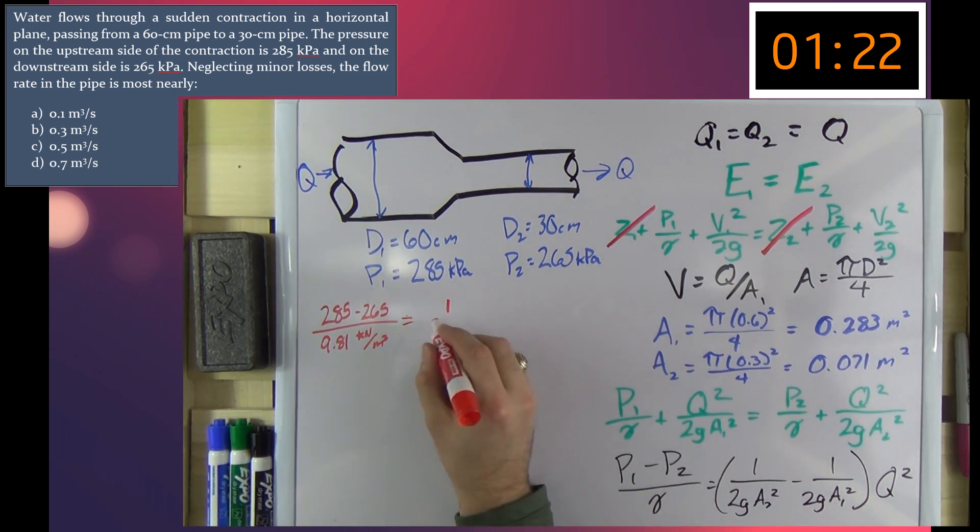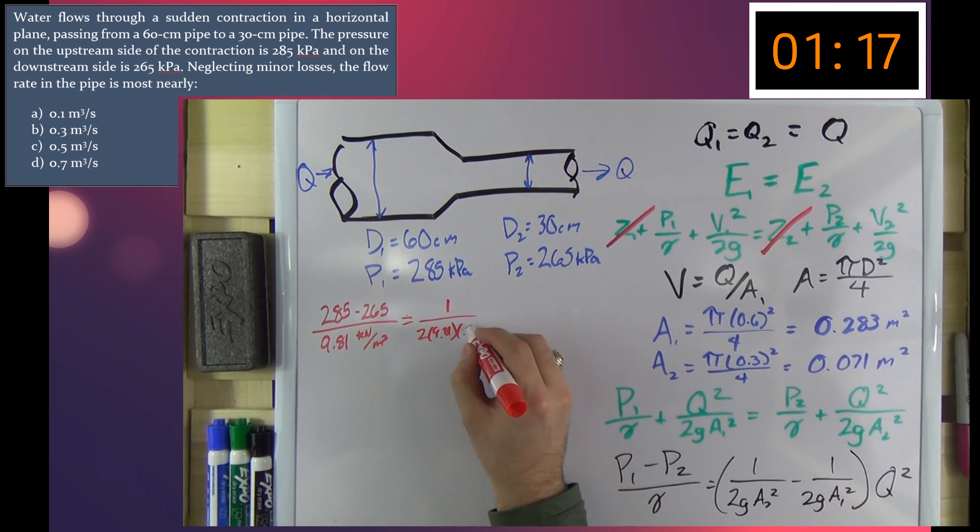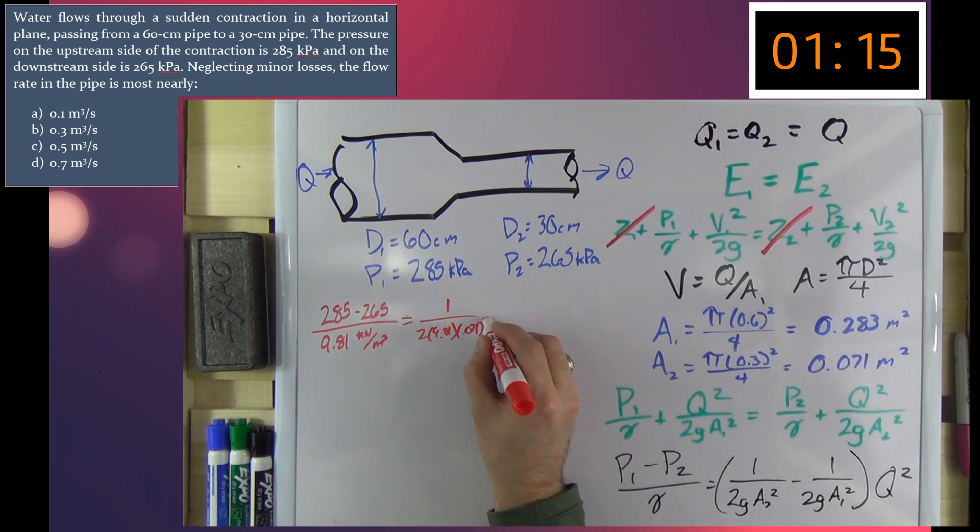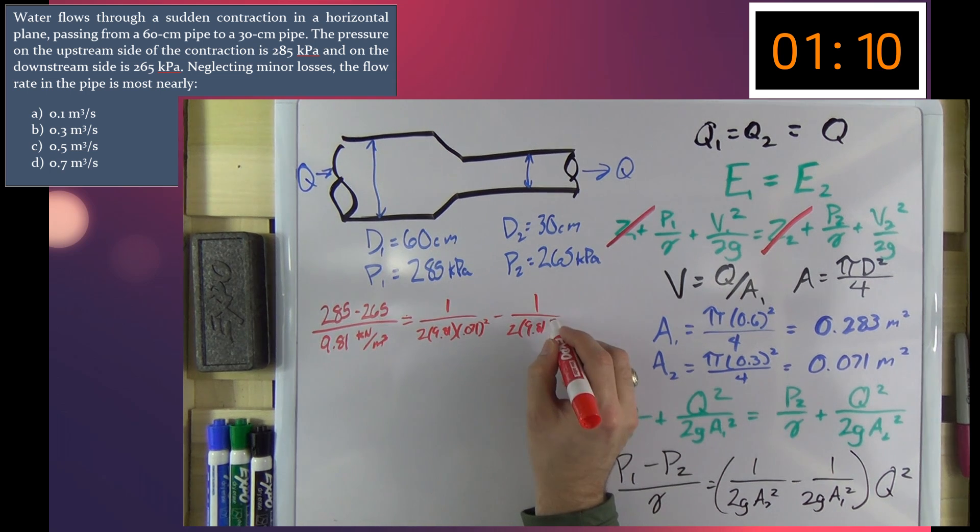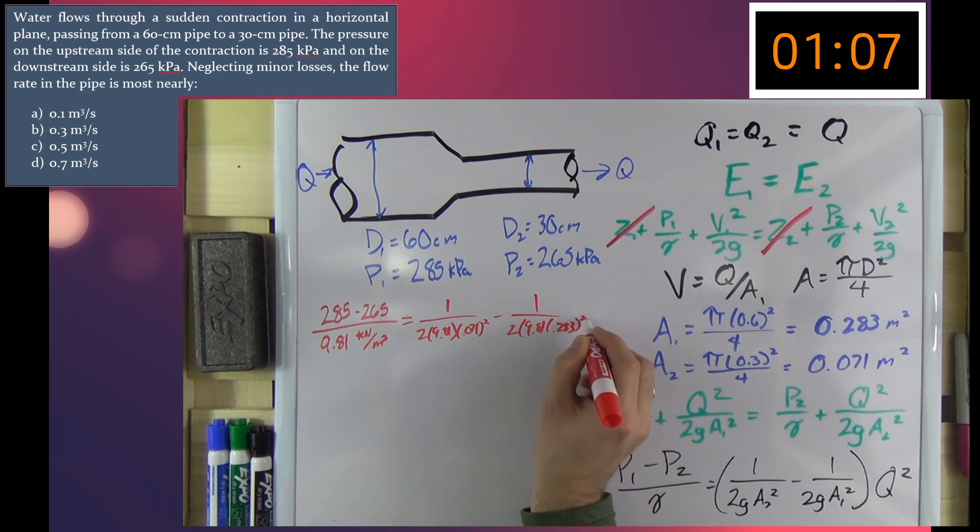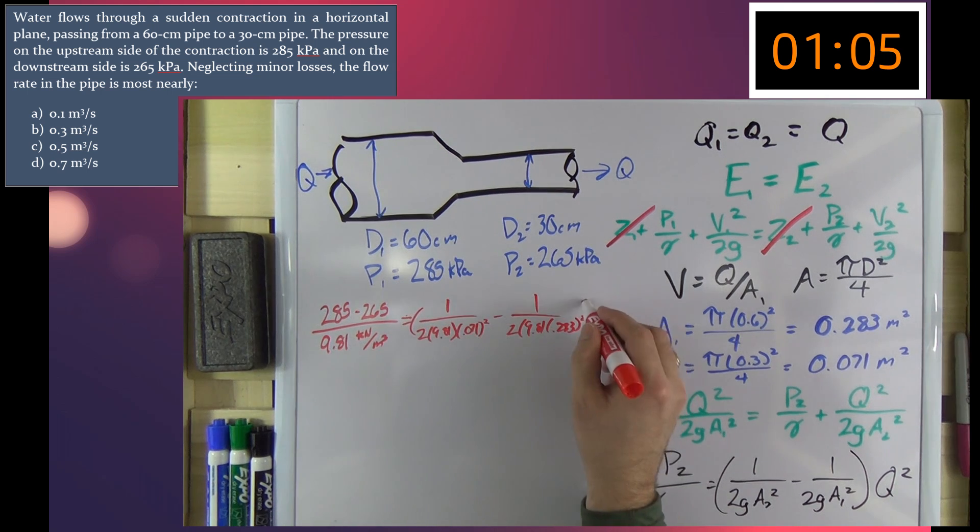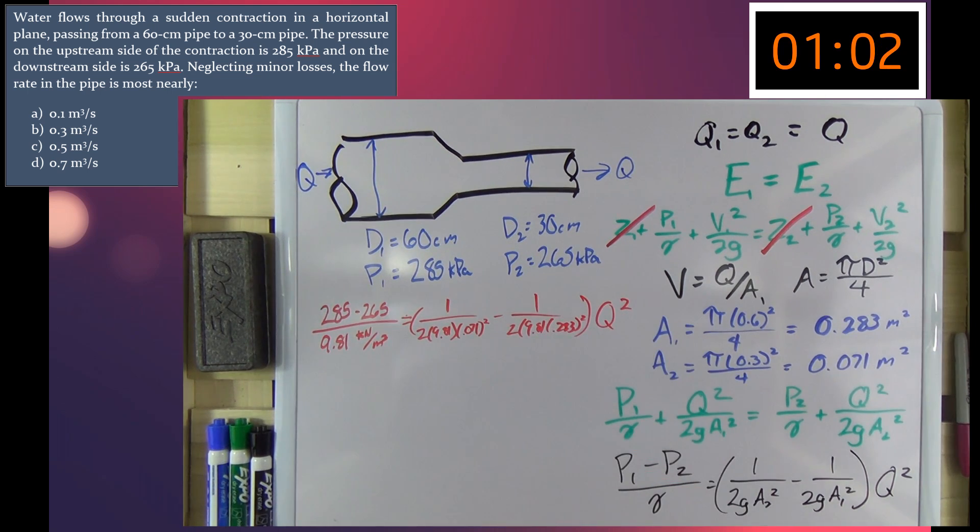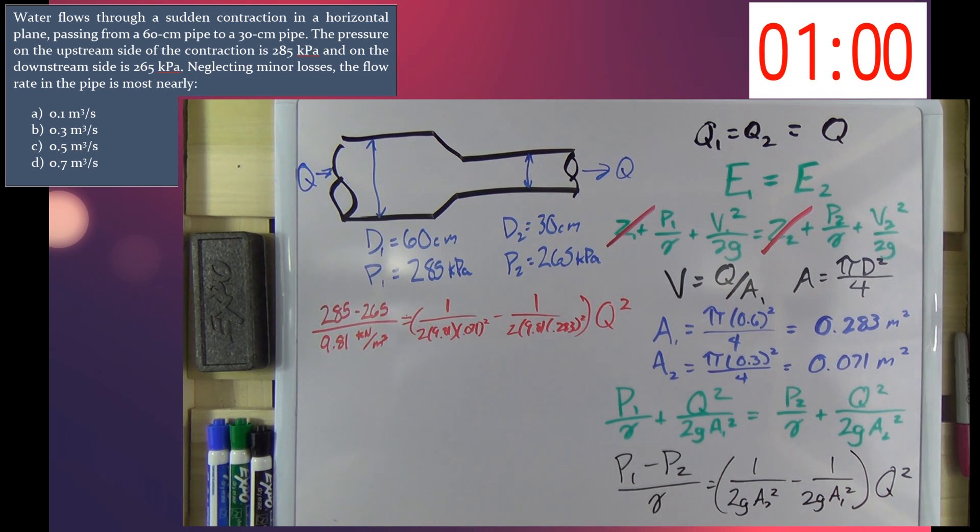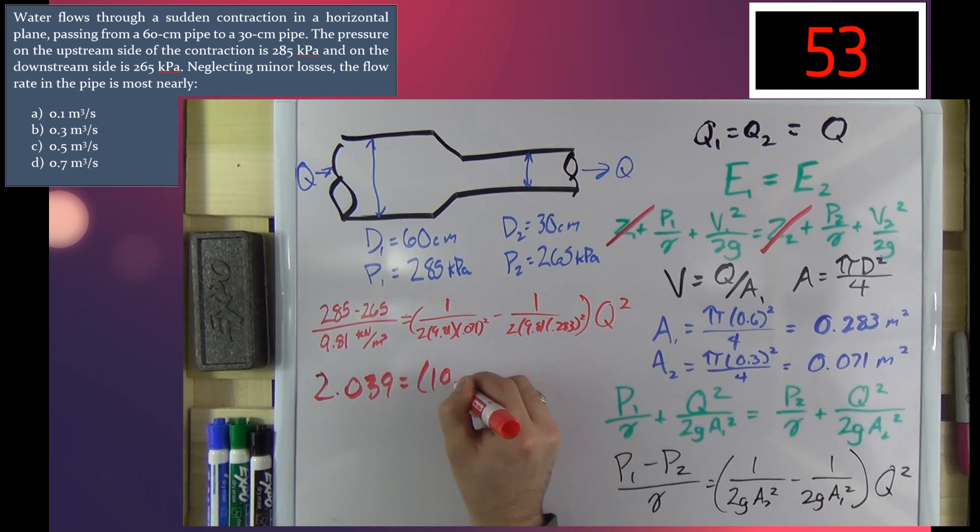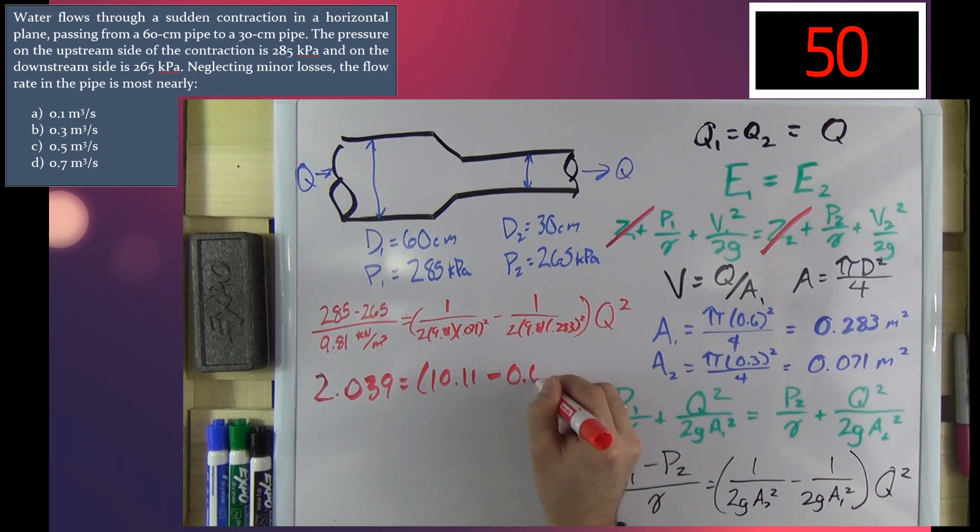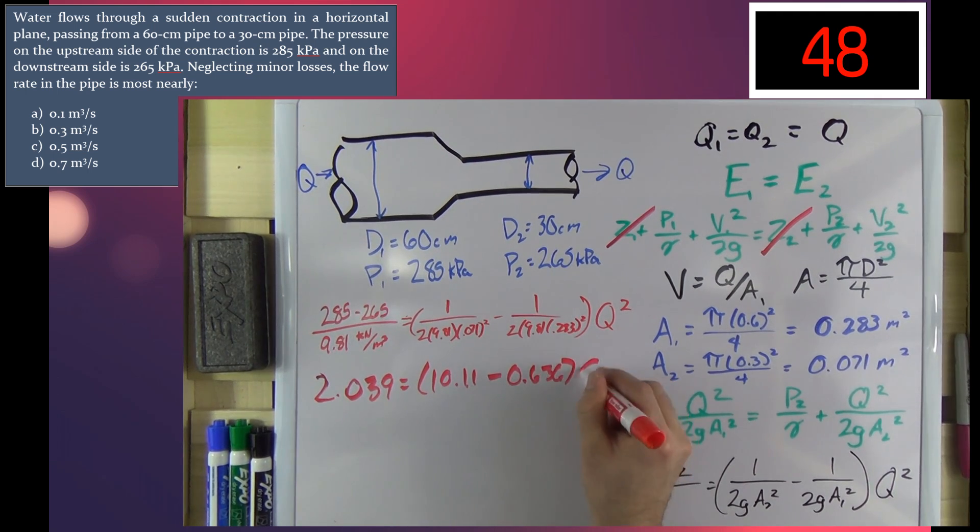That is all equal to 1 over 2 times 9.81 times 0.071 squared minus 1 over 2 times 9.81 times 0.283 squared, all of that times Q squared.